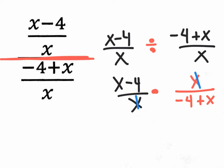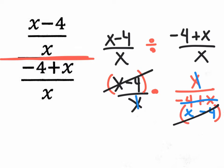So now we really do have a fraction times a fraction. Nothing's factorable, so we can just start canceling. At least we can cancel out this x down here with this x up here. Now let's write it in order with the x first and the number second. So let's take this positive x and write it first, and the minus 4 second — so x minus 4. Now it looks identical, with x minus 4 up here and x minus 4 down here, and we cancel the whole thing. So the final answer is 1.